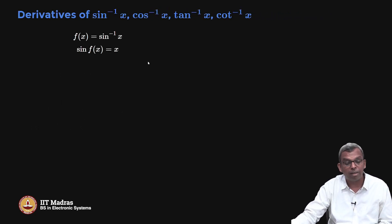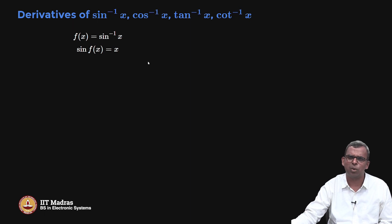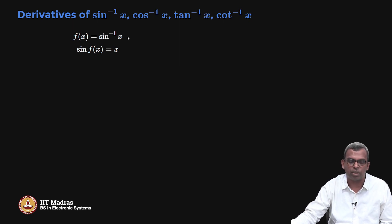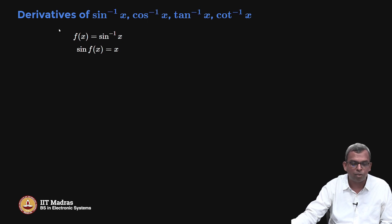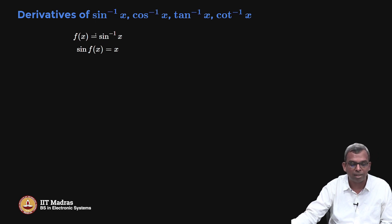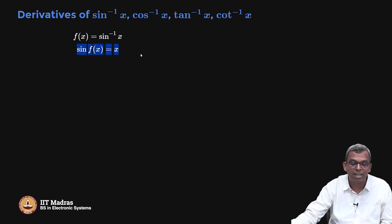How do you think of the derivative of sin inverse of x? You will get some very interesting looking expressions here. So, f of x, let us say, is sin inverse of x and I am interested in f prime. The way to do derivatives for inverse functions is to first consider the forward function itself and invert it. So, f of x is sin inverse of x means sin f of x is x.